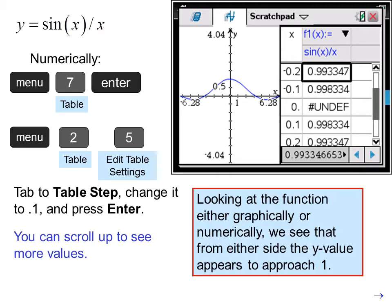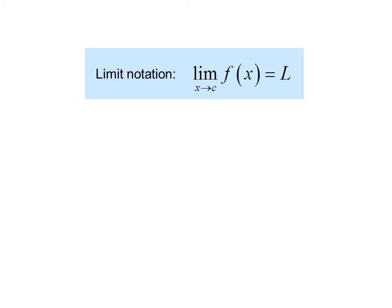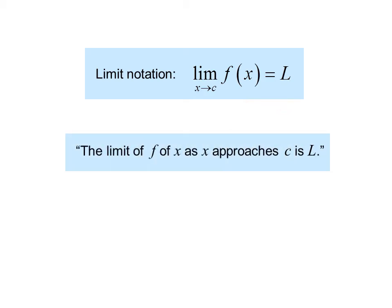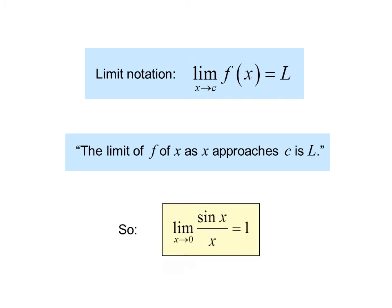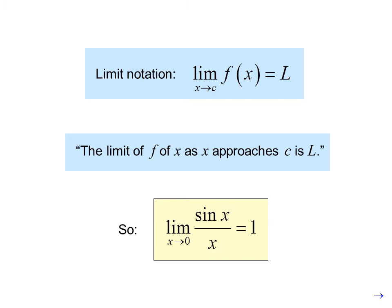Looking at the function either graphically or numerically, we see that from either side the y value appears to approach 1. Limit notation looks like this: we read 'the limit as x approaches c of f of x equals L,' or 'the limit of f of x as x approaches c is L.' So in this case, the limit as x approaches 0 of sin x over x equals 1.